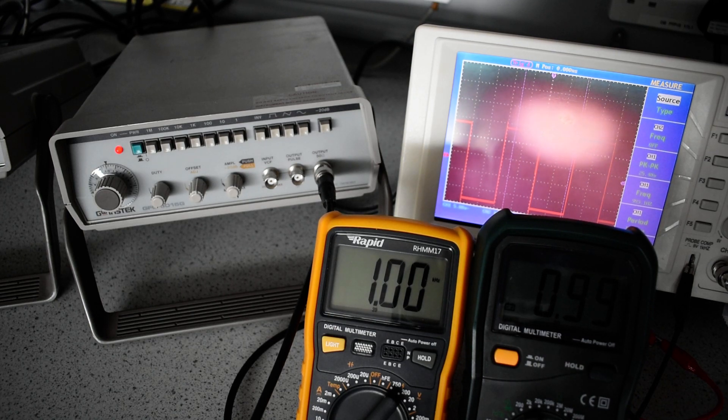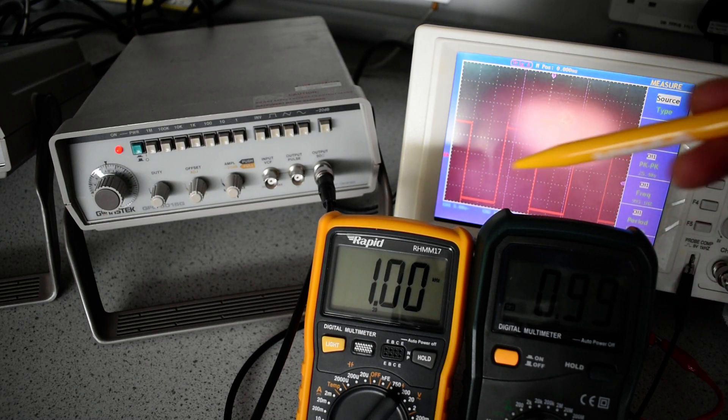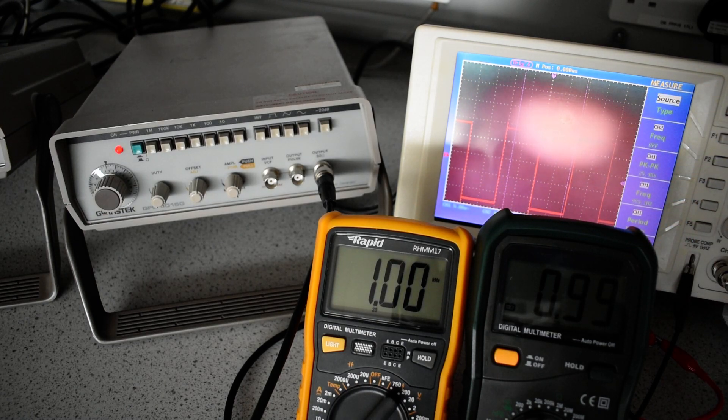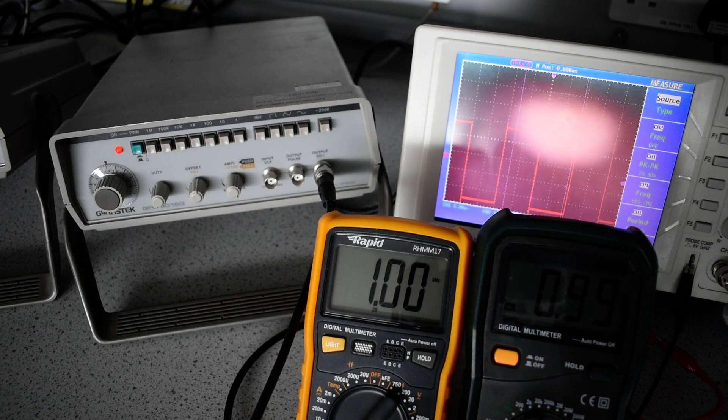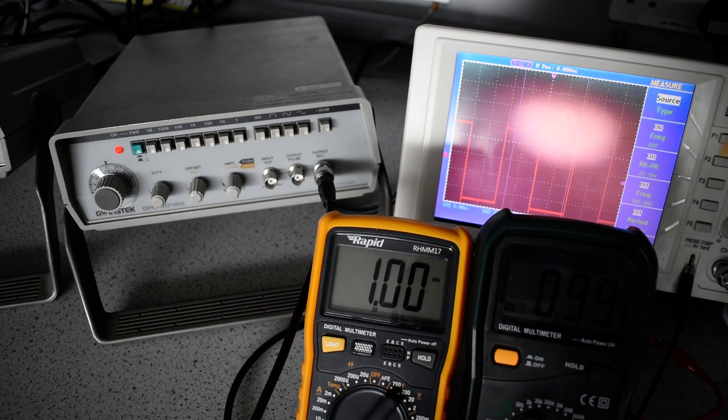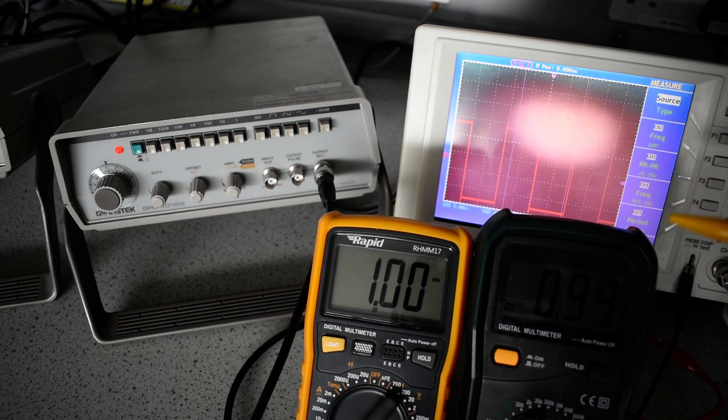These three different pieces of test equipment do read very similar values. So that would give a confidence level that they are accurate. How do we know what accuracy we have on test equipment? They should have a calibration certificate. The only one that we can be sure about is the Rapid RH MM17, which is a new meter a couple of months old.